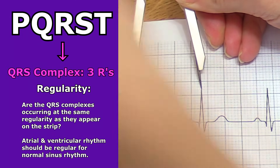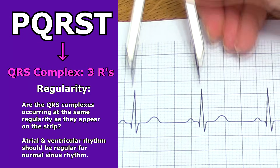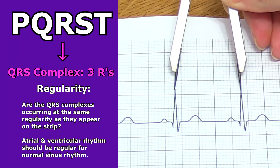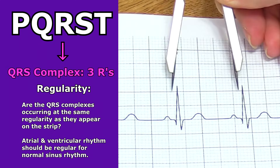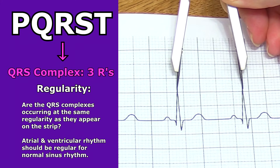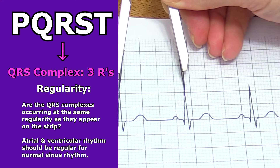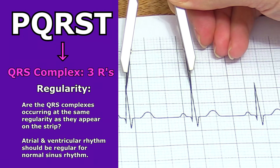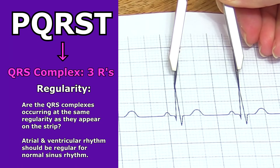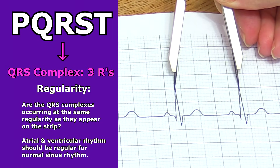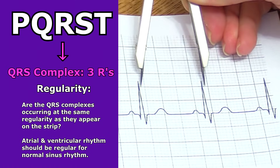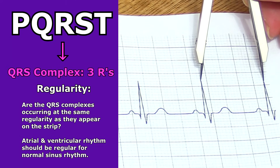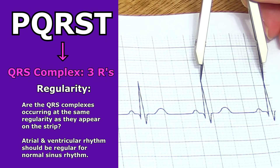Look at the regularity of the QRS complex. Are the QRS complexes occurring at the same regularity as the consecutive QRS complexes within that strip? This represents ventricular regularity. You can do this by taking your calipers, just as you did with the P waves, going from R wave to R wave. Both the atrial and ventricular rhythm should be regular in order for it to be normal sinus rhythm, showing that it's originating in the SA node.